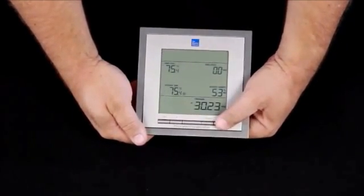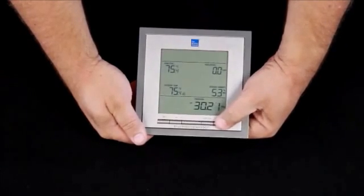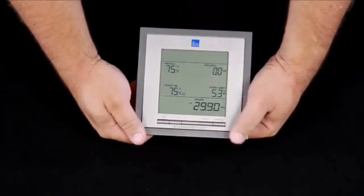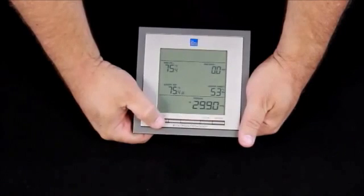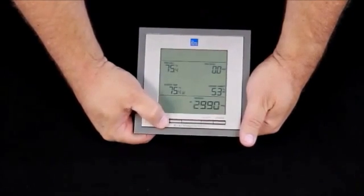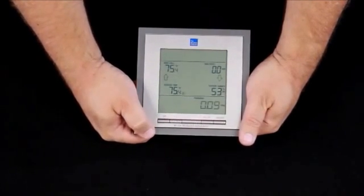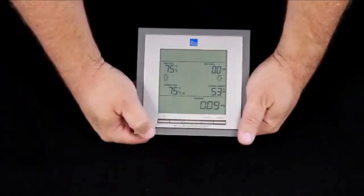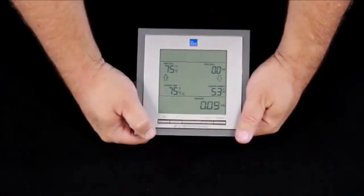To lower it, we use the min-max button, and again, if you hold it down, the count will go faster. Once you've set that relative pressure, press the set button once again, and it says okay, how do you want your alarms?